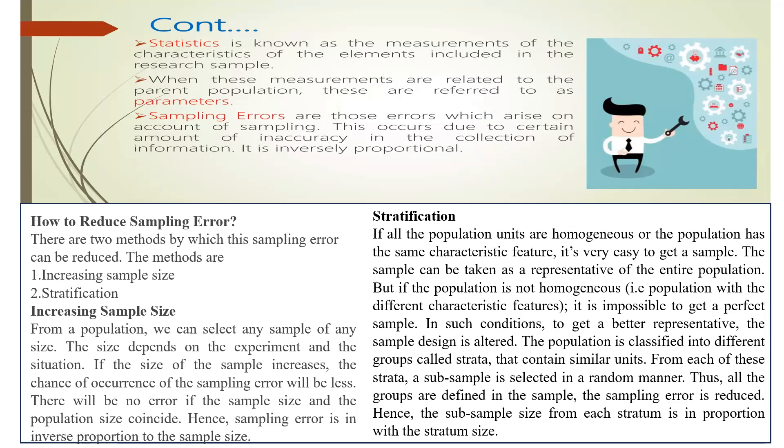Thus, all the groups are defined in the sample, and the sampling error is reduced because even though the sample is heterogeneous, it is represented proportionally. The sub-sample size from each stratum is in proportion with the stratum size, so whatever total population is there, it will be represented properly, and the error will be reduced.